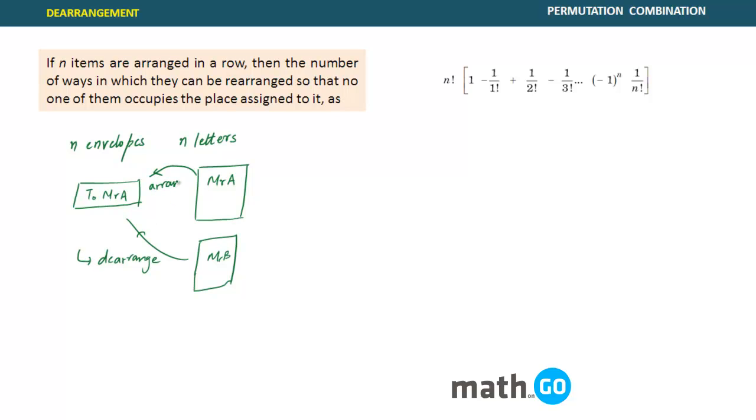This case would have been case of arrangement that it has gone into its proper place. But if Mr. B's letter goes into Mr. A envelope or Mr. C goes to Mr. A, these things are called derangement.